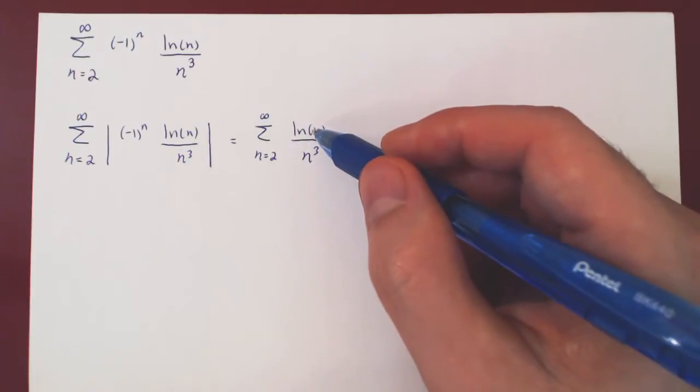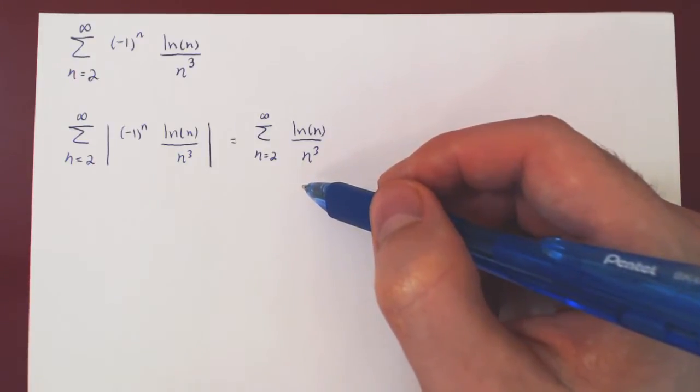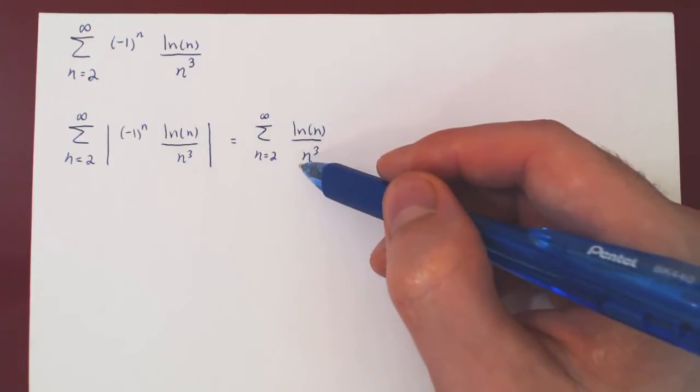If you do so, integrating ln of x over x cubed will require integration by parts, and then in the limit, you will also need to use L'Hopital's rule. That's a fair amount of work.